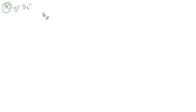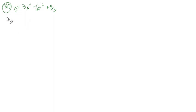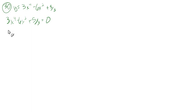Now let's do number 30. The function looks like this: f(x) = 3x⁴ - 6x² + 5/3. We want to find possible x-intercepts, so we set the function equal to zero.